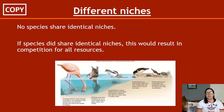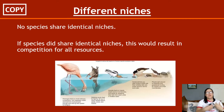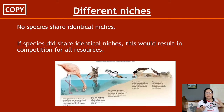No species share identical niches. If they did, it would result in competition for all resources, leading to natural extinction. Two different species would fight it out, and the one less good at what it does will die off, leaving the stronger species behind.